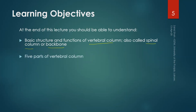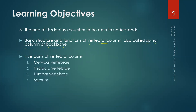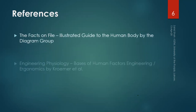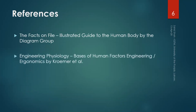We will see five parts of the vertebral column: cervical vertebrae, thoracic vertebrae, lumbar vertebrae, sacrum, and coccyx. We will also see two types of curves in the vertebral column: lordosis and kyphosis.